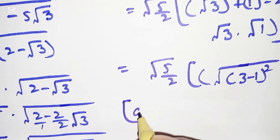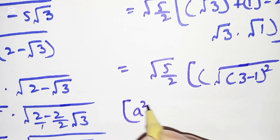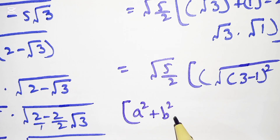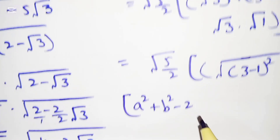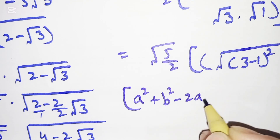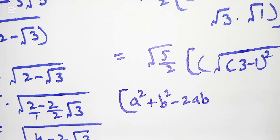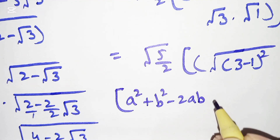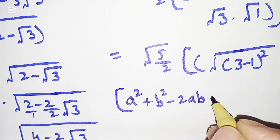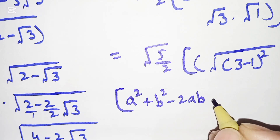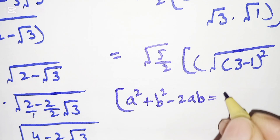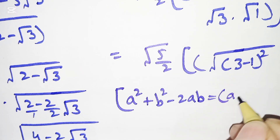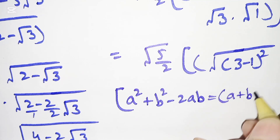Now, a squared plus b squared minus 2ab — we can write using the algebraic formula, which is equal to (a minus b) squared.